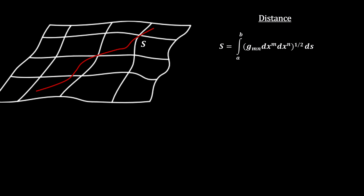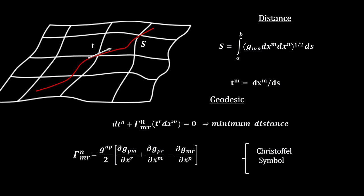With the metric tensor, we can measure distances between any two points by adding up all the small distances along the way. Taking the formula and finding its minimum is an exercise in calculus that gives us the shortest distance. These are the geodesic lines.